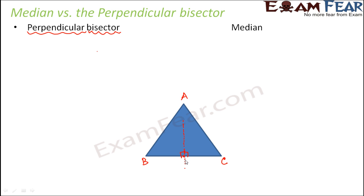By now we know what a median is — the median is the line which joins the midpoint of BC to the vertex A. So that would be the median.